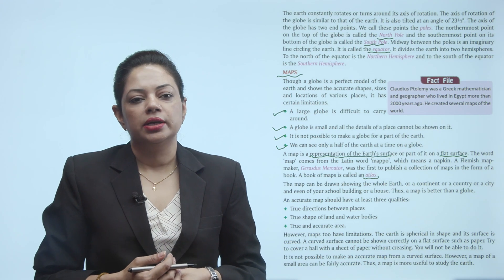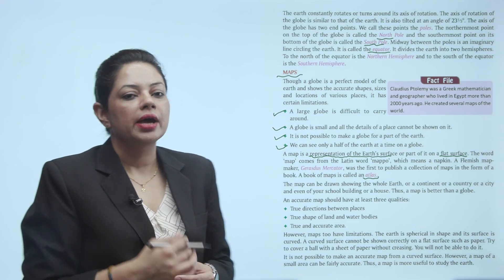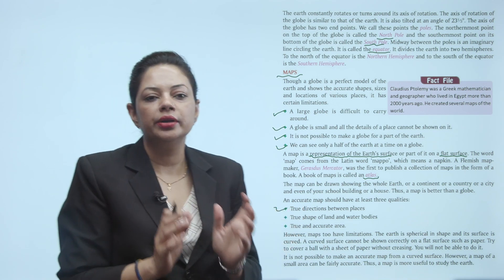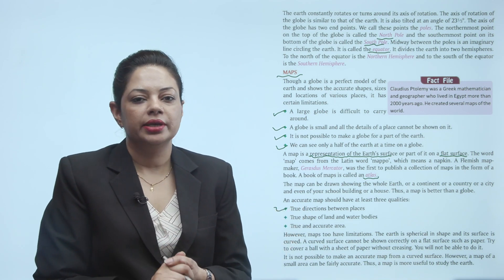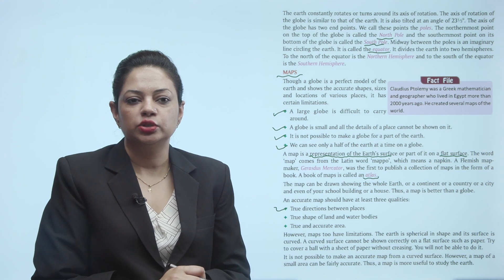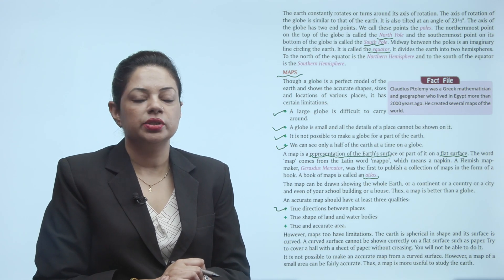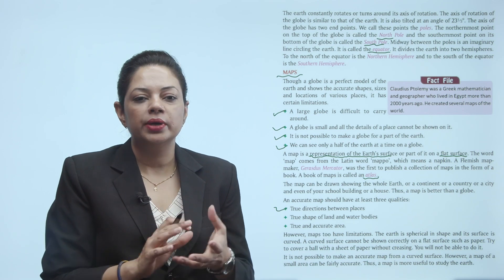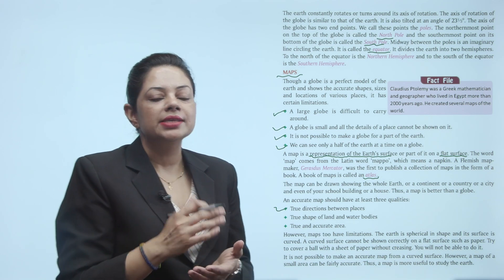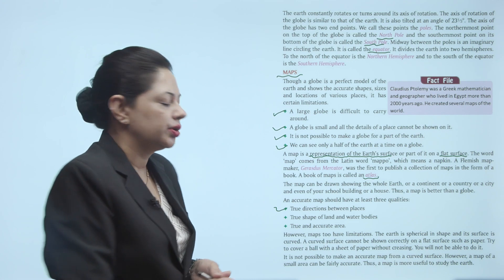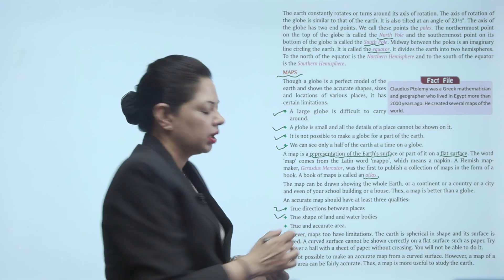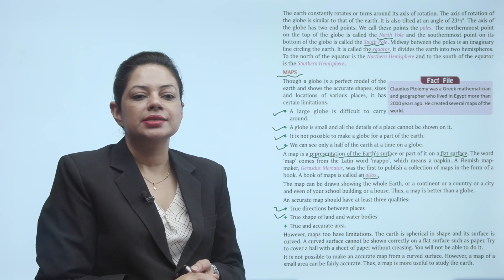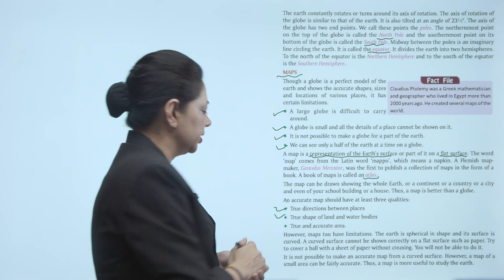An accurate map should have at least three qualities. First is true directions between places — north, south, east, west ko properly use kiya jaata hai. Second is true shape of land and water bodies. Third is true and accurate area — exact scaling ke use karke hum exact area ko map par draw kar sakte hain.